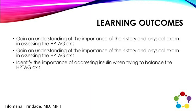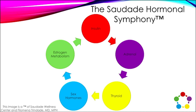Our objectives are to gain an understanding of what's going on with the history and physical, and trying to assess the hypothalamic-pituitary-adrenal-gonadal axis and how those hormones are processed. Part of the Soledad Hormonal Symphony is also estrogen metabolism. We're going to look at the communication system among all the different hormones — insulin, adrenals, thyroid, sex hormones — and how they're metabolizing these, because that gives us a window into risk and what is going on with the detoxification pathways in that particular patient.